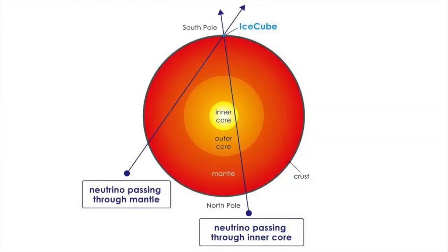But catching neutrinos isn't easy. After all, most of them can pass clean through the Earth as if it weren't there.